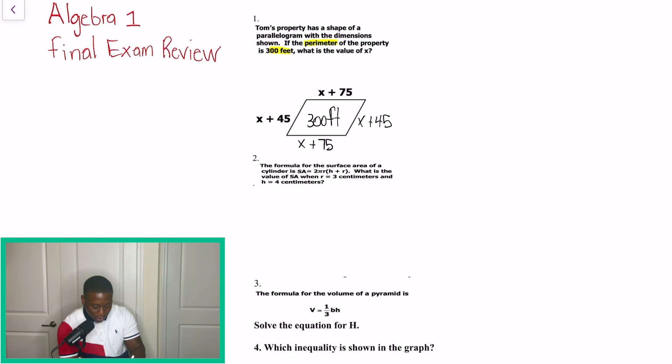So what we're going to do is we're going to write this out and we'll have X plus 75, X plus 75, plus X plus 45, and plus X plus 45. And like we said, this is all going to be equal to 300. So now, once we combine our like terms, we'll have 4X plus 240 is equal to 300.